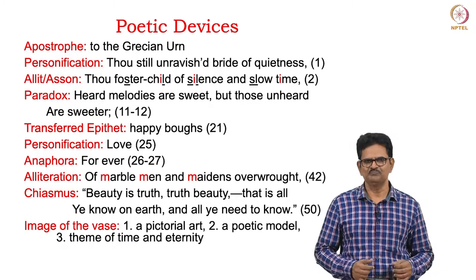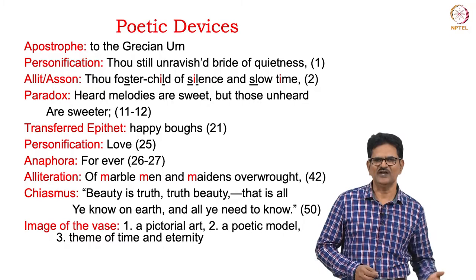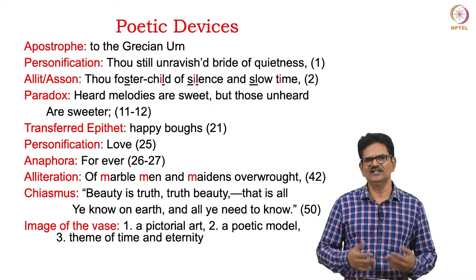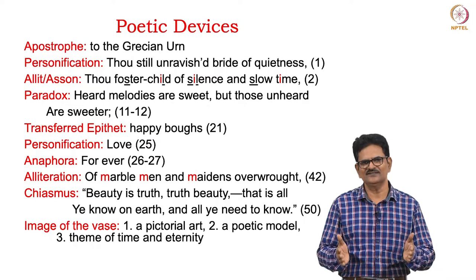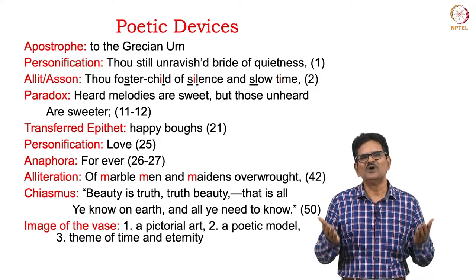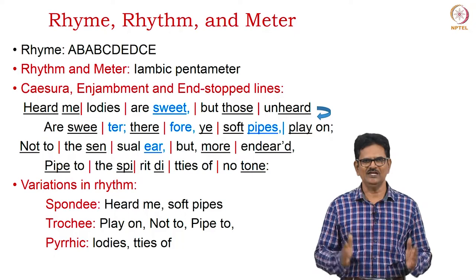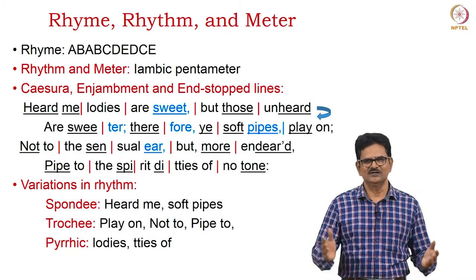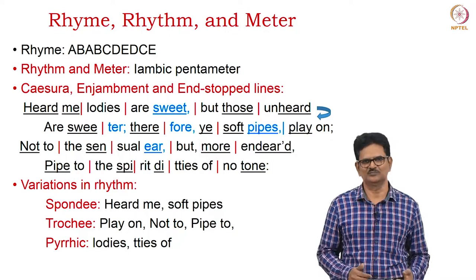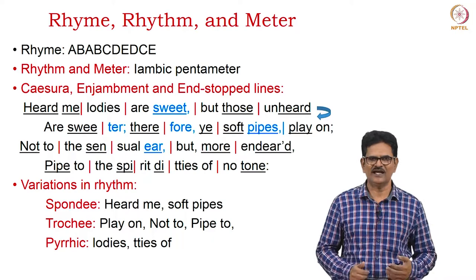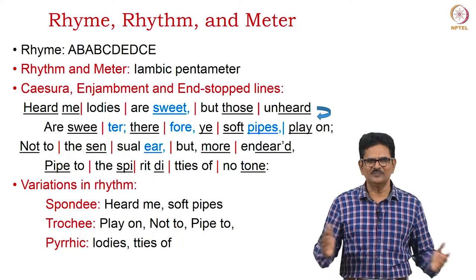We have some images of this vase in the poem. The vase can represent pictorial art — it can be a painting, it can be a sculpture. It is also a poetic model and deals with the theme of time and eternity. How to capture this evanescent passing time in art is the responsibility of poets and artists in general. We have wonderful rhyme, rhythm, and meter. The rhyme scheme is ABABCDEDCE. The rhythm and meter can be understood in one phrase: iambic pentameter. This is a traditional poem and we have caesura, enjambment, and end-stopped lines.